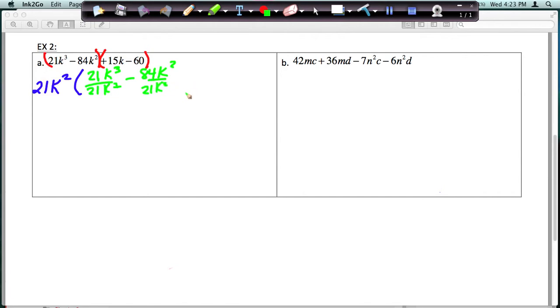So now we're going to do the same thing with the last two terms. I'm going to look for the GCF, and the GCF of 15k and 60 is just a 15. That's the only thing they have in common. So I'm going to pull out the 15, and then I'm going to divide both terms by 15 since I'm pulling that out.